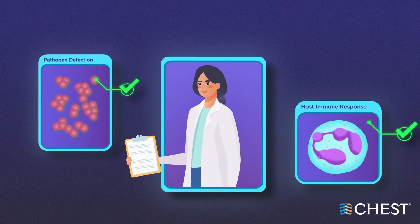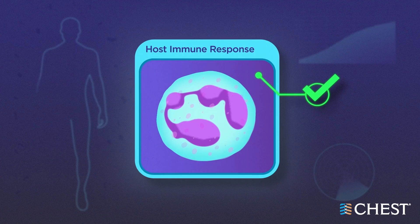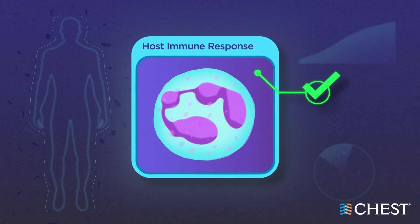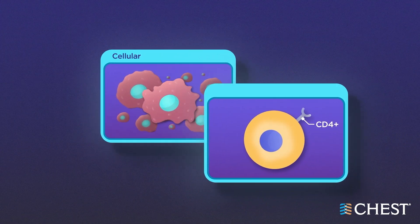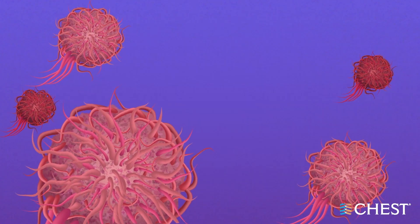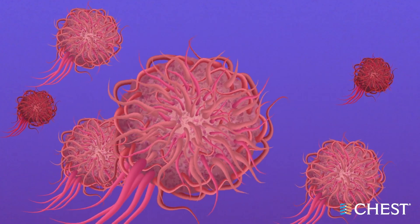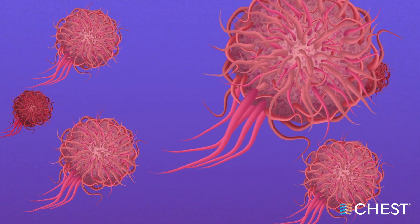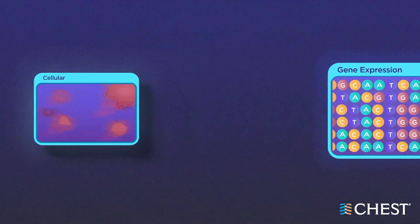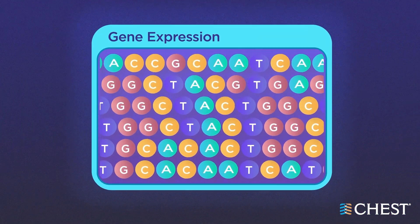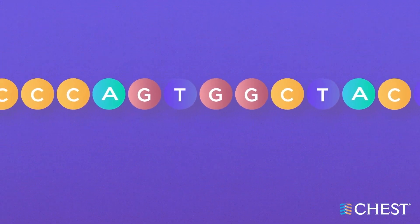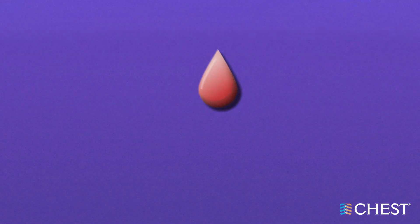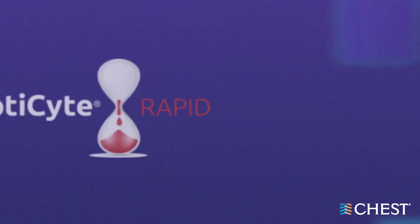Additionally, there are several new tests that detect the host immune response to infection. Cellular tests can detect changes in white blood cells, including changes in monocyte distribution width or changes in neutrophil rheology. Gene assays can detect expression of host genes that are activated during infection, including Septicyte and others under development.